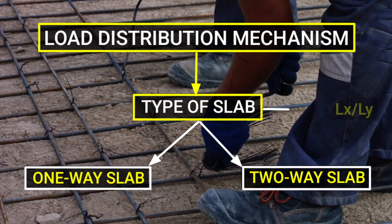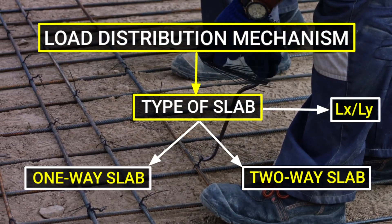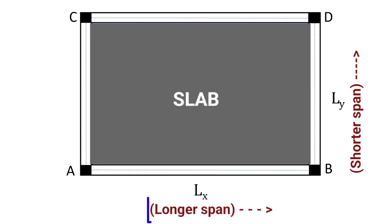The type of the slab is defined by the aspect ratio Lx/Ly, where Lx represents the longer span and Ly represents the shorter span. If the ratio of the longer span to the shorter span is greater than 2, that is, if Lx/Ly > 2, such a slab can be termed as a one-way slab.